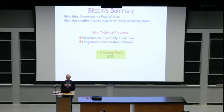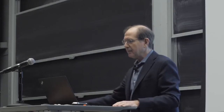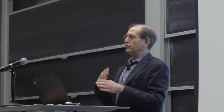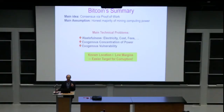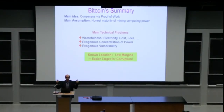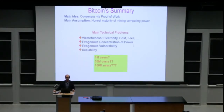The second problem is an exogenous concentration of power, which is more troublesome. The power of a distributed ledger comes from being distributed, but if there are three mining pools that somehow control the Bitcoin blockchain, how distributed is it? Furthermore, miners are an exogenous power totally orthogonal to money, which is problematic. They have a known location because they consume so much electricity — the electricity network knows where they are. They have low margins, they're few, you know where they are — this is a recipe for disaster if you want to corrupt people.